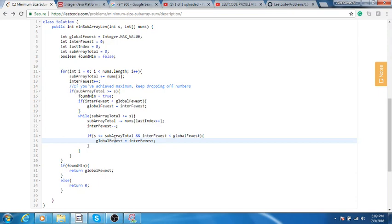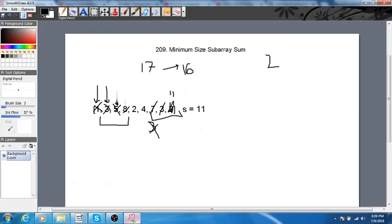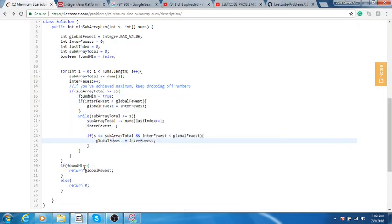We loop through every single number doing what I showed you. We have to remember, if we found a minimum, we will return our global fewest, which was the fewest amount of numbers that we were able to solve the question with. If we weren't, we just returned zero according to the problem.